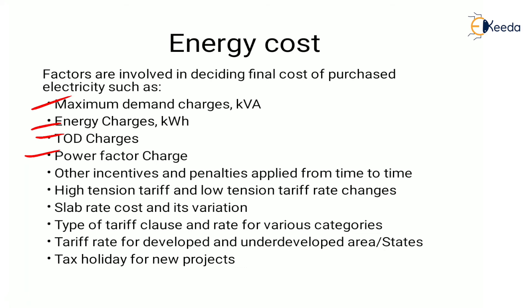Next is power factor. Then other incentives and penalties applied from time to time. Next is high tension tariff and low tension tariff rate changes. Next is slab rate cost and its variation — there are different slabs in the electricity bill. Next is the type of tariff clause and rate for various categories such as LT category or HT category. Next is tariff rate for developed and underdeveloped areas or states. And the last one is tax holiday for new projects. This covers energy cost — both thermal and electrical energy.